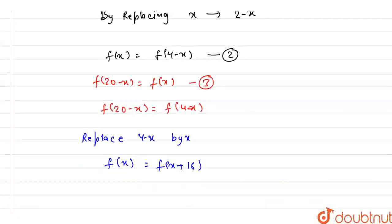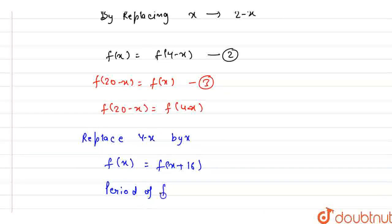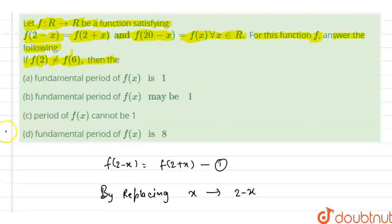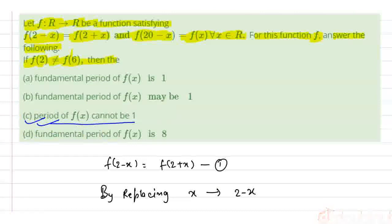So the period of f(x) is 16. Now, if we see our options, the period cannot be 1. This is our final answer. Thank you.